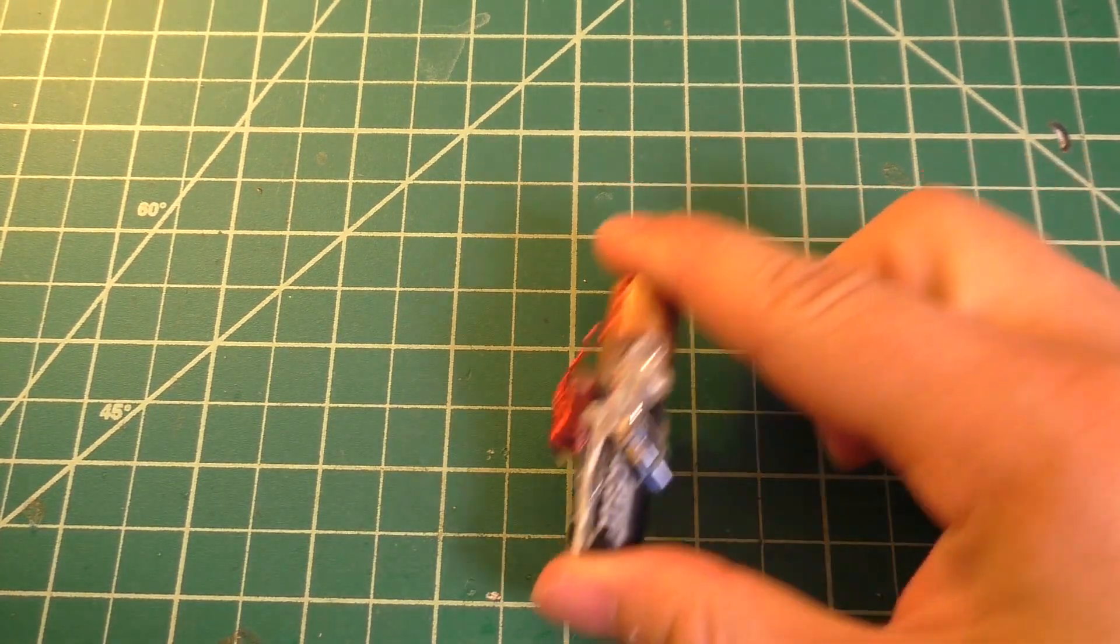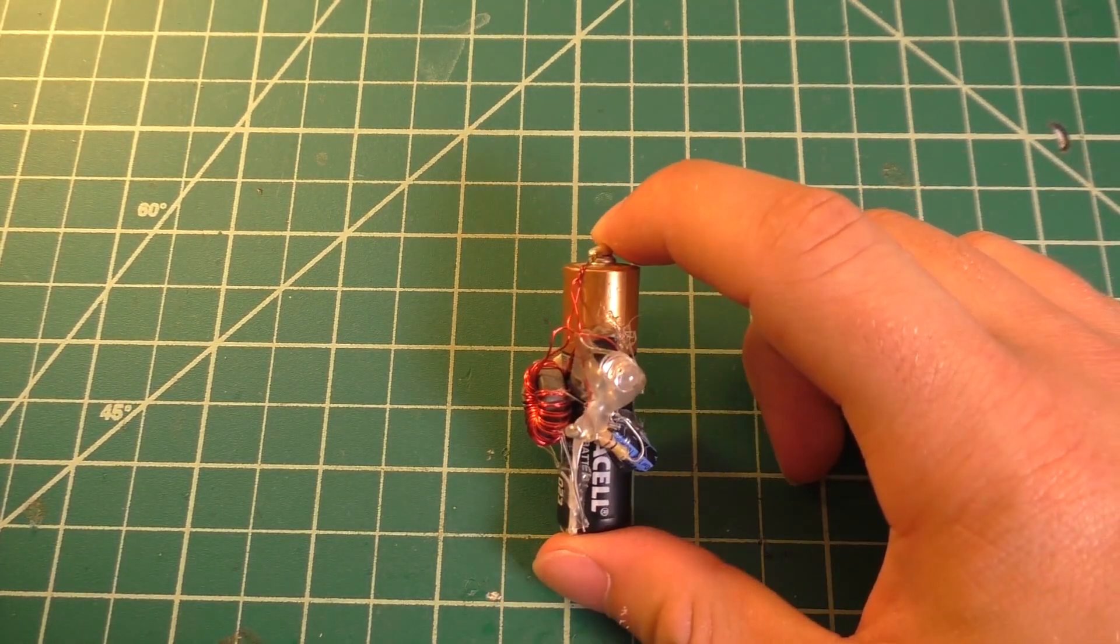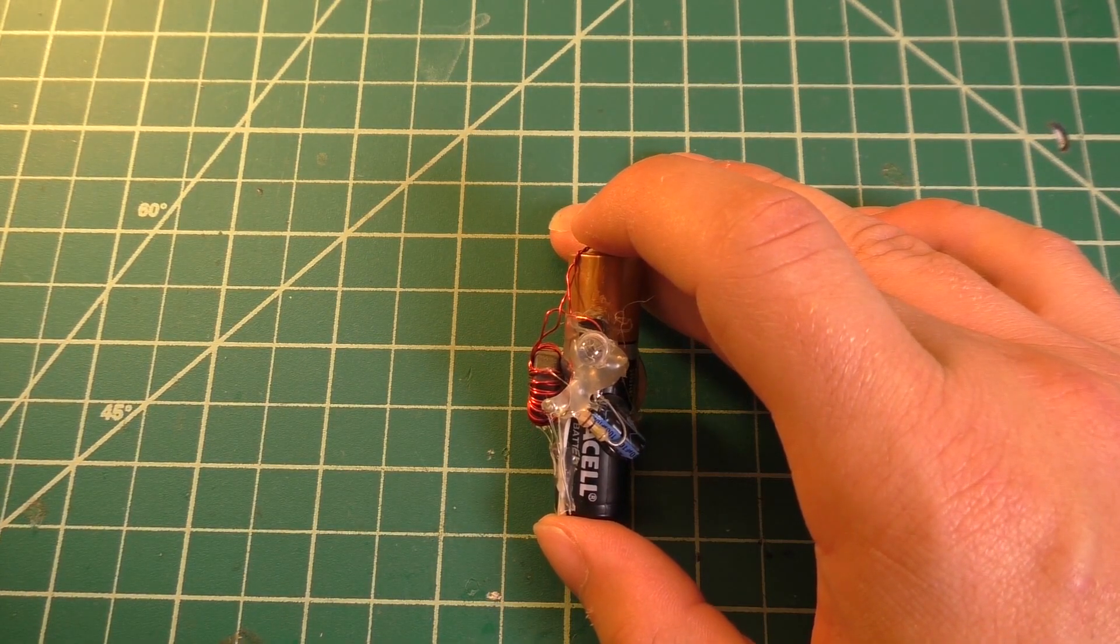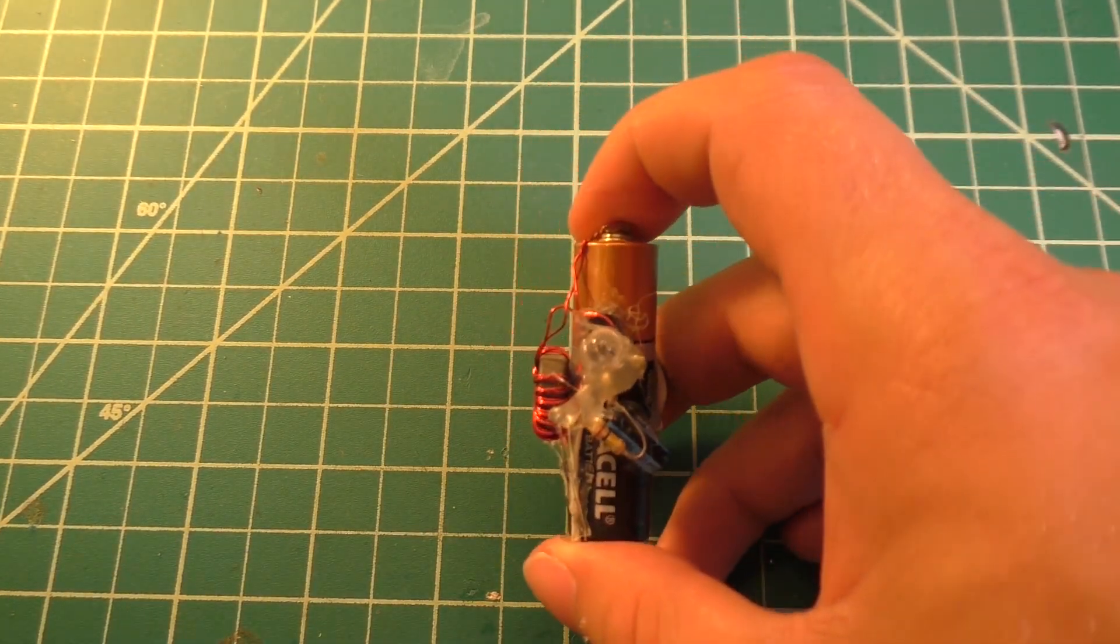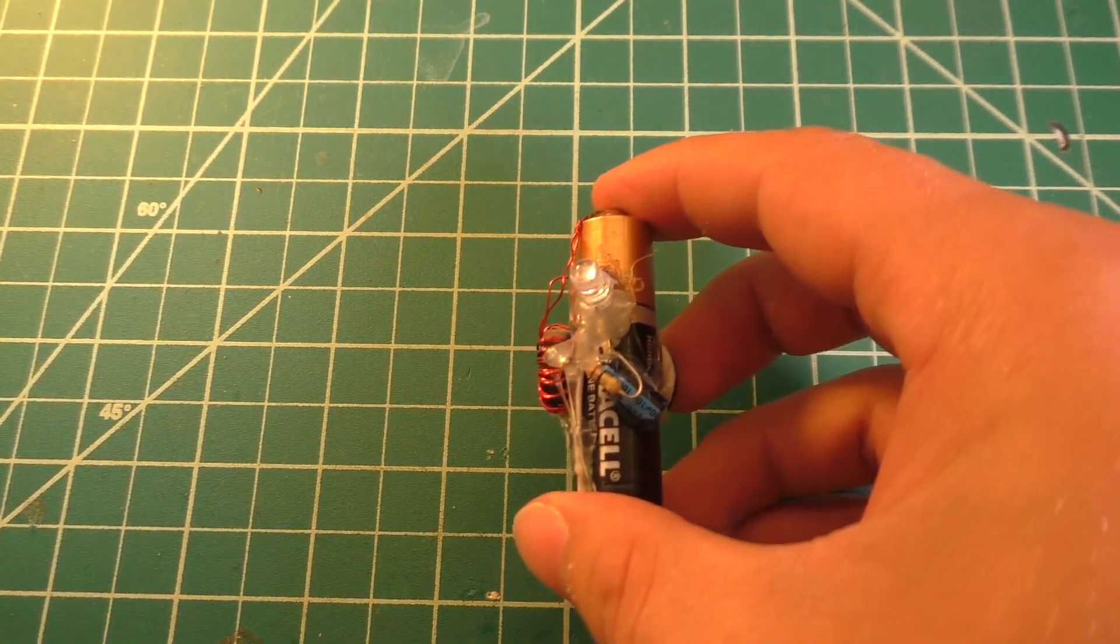So today is June 18th of 2019 and that means it's been about three years since I've built the little long life blinking jewel thief. Now if you're a longtime subscriber you may remember this guy, but this thing is still blinking away after three years.